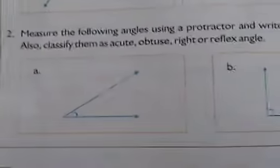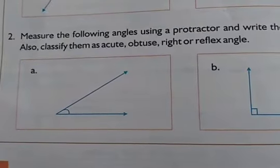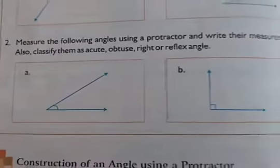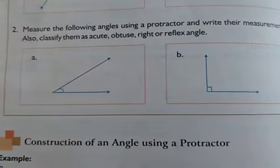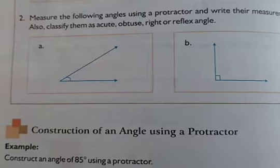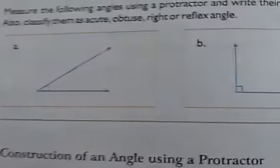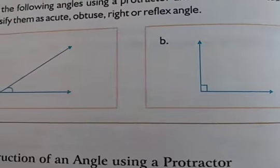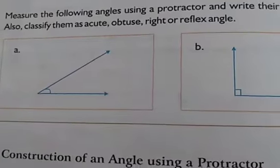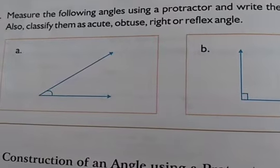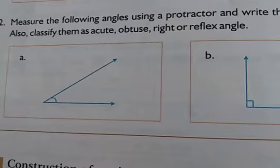In question number 2, you will measure the following angles using a protractor and write their measurements. Also classify them as acute, obtuse, right, or reflex angle. You will measure these angles with the help of the protractor and classify them accordingly.